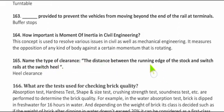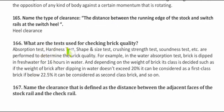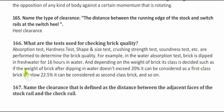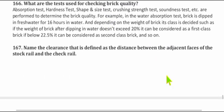Question 165: The clearance defined as the distance between the running edge of the stock rail and the switch rail at the switch heel is called heel clearance. Question 166: What tests are used for checking brick quality? Tests include: absorption test, hardness test, shape and size test, crushing strength test, and sound test. For example, in the water absorption test, a brick is submerged in fresh water for 16 hours; if the weight increase does not exceed 20%, it is classified as a first-class brick; if below 22.5%, it is a second-class brick.